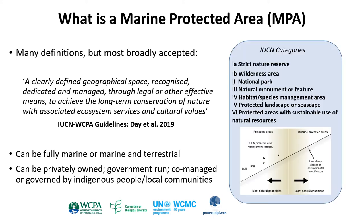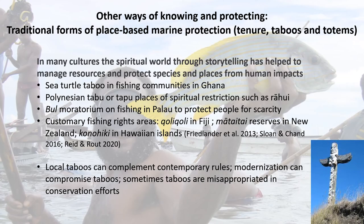IUCN provides six broad categories for MPAs that range from a strict nature reserve, which tends to be no-take, through to various definitions with increasing human interaction and potentially human impact, to category six which is the protected area with sustainable use of natural resources — a multi-use area. The IUCN guidelines have been written to increase the accuracy and consistency of classification and reporting of MPAs globally, but of course there are many MPAs that have been put into practice for centuries before the IUCN guidelines existed.